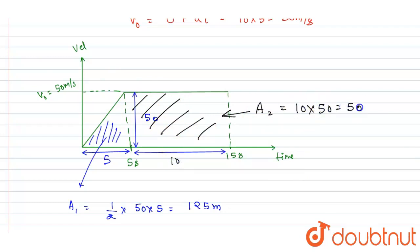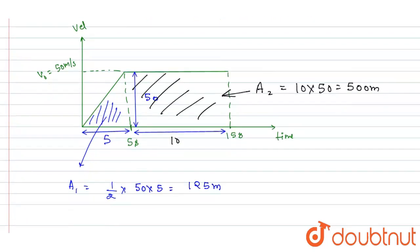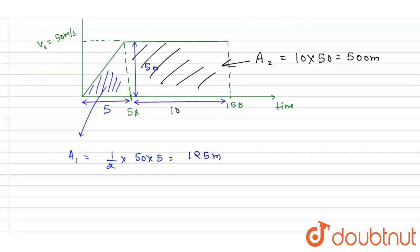So the distance traveled, that is asked in the question, equals 125 plus 500, which equals 625 meters. And this is the answer of this question.